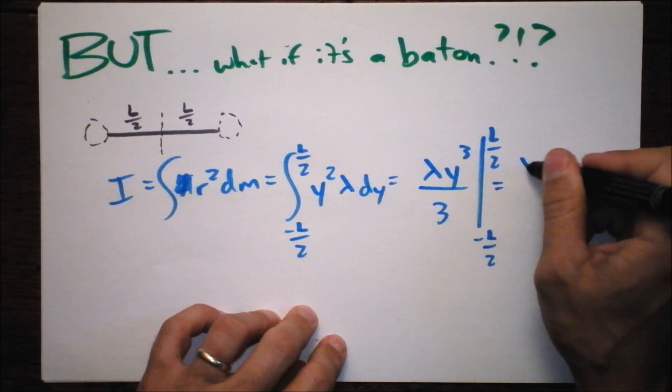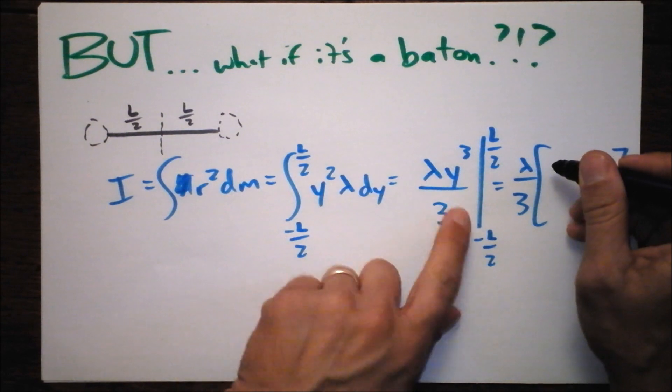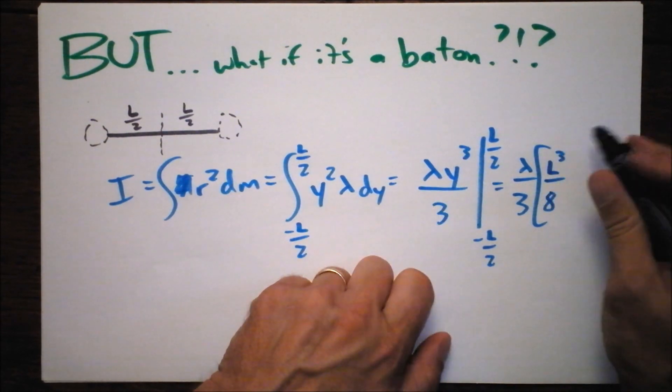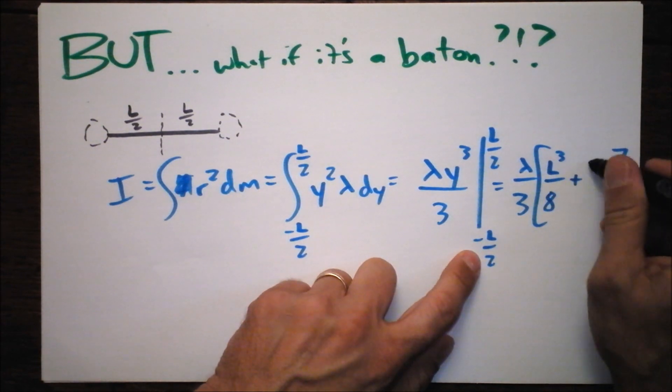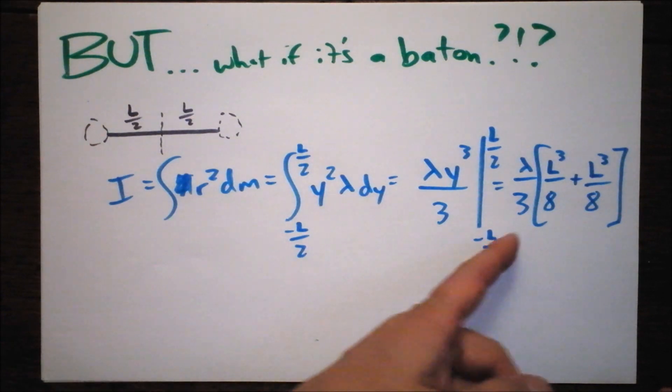And this is lambda over three times some stuff in these brackets here. We're going to get L cubed over eight plus—that's minus minus—L cubed over eight. Well, that's just L cubed over four.